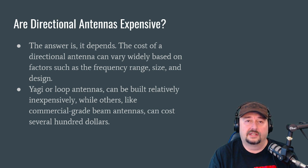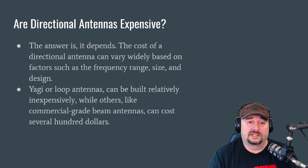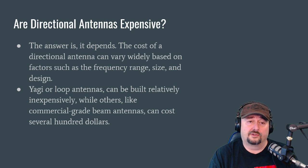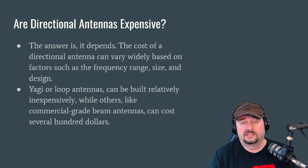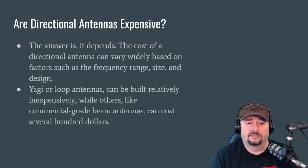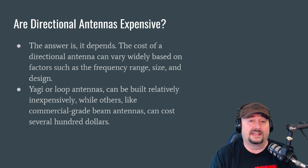One thing hams often ask is: are directional antennas expensive? The answer depends, but in reality, they're more expensive. Cost varies widely based on frequency range, size, and design. A directional antenna for 10 meters will be smaller, lighter, and more compact than one for 40 meters. Yagi or loop antennas can be built relatively inexpensively, while commercial-grade beam antennas can cost several hundreds to thousands of dollars.